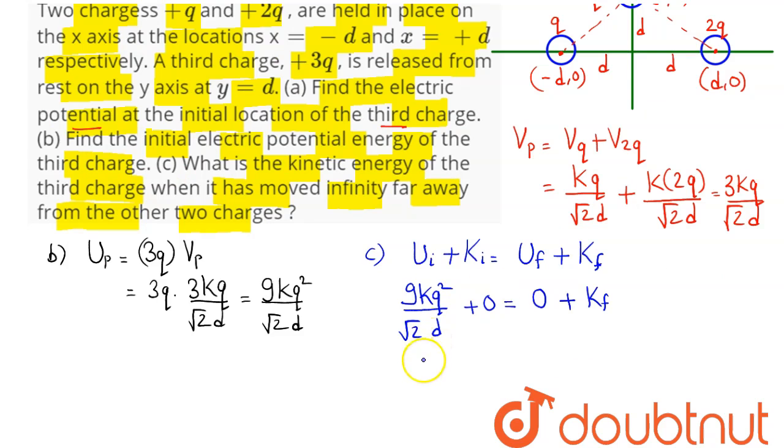Final potential energy at infinite is 0 and final kinetic energy is being asked at infinite. So, we can say here the final kinetic energy comes here as 9kq square divided by root under 2 into d, which is our answer.